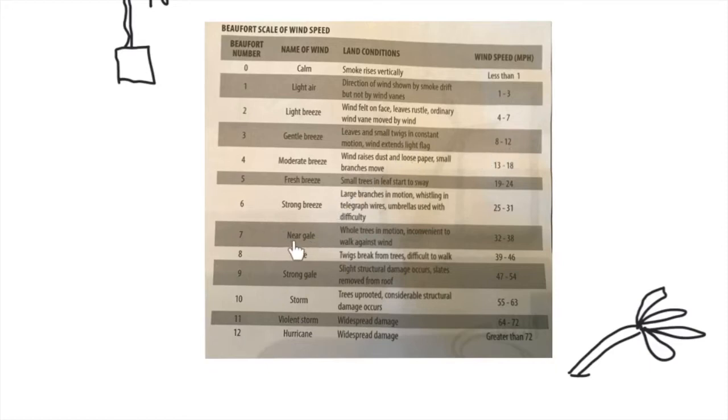Then down here, a 7 on the Beaufort Scale would be a near gale, whole trees in motion, inconvenient to walk against the wind, 32 to 38 miles per hour. So this made it a little bit easier to estimate the wind speed based on what sorts of objects you saw and how they were moving.